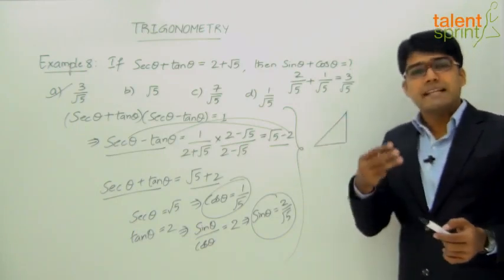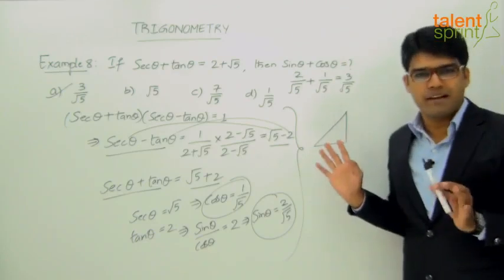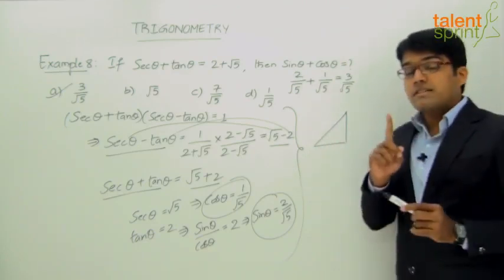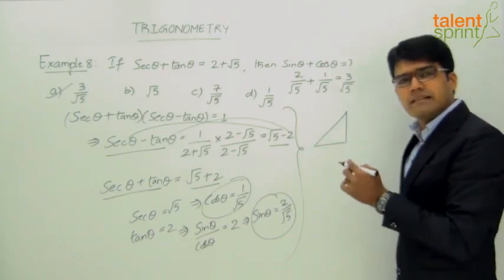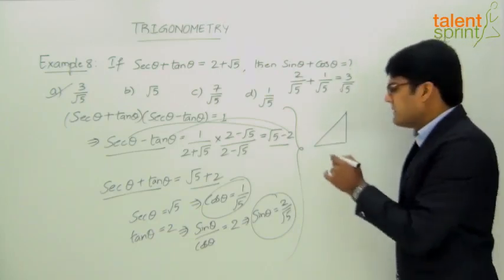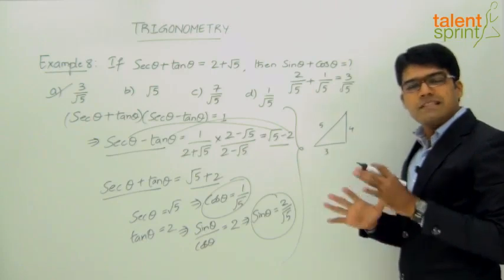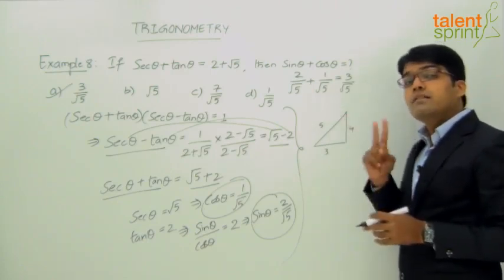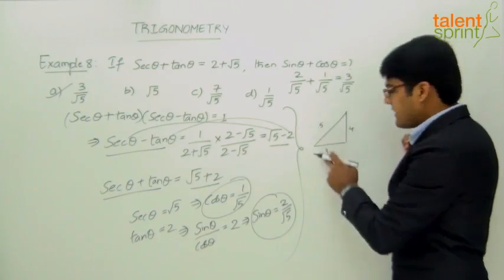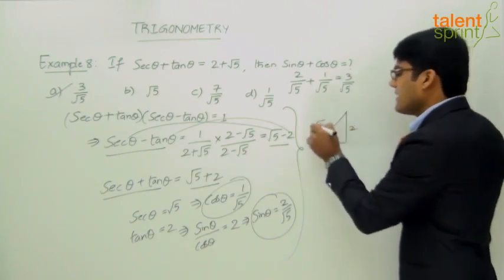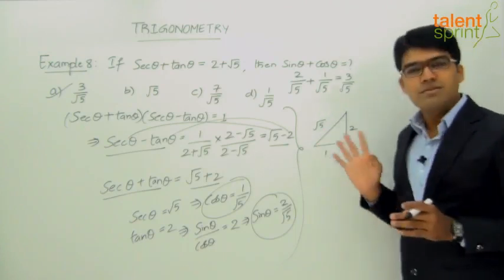Pythagoras theorem states that hypotenuse squared equals base squared plus perpendicular squared, giving triplets like 3, 4, 5. Another triplet is 1, 2, and root 5, since 1 squared plus 2 squared equals 1 plus 4 equals 5, and (root 5) squared equals 5. So this triplet satisfies Pythagoras theorem, and we can label angle theta in this right triangle.